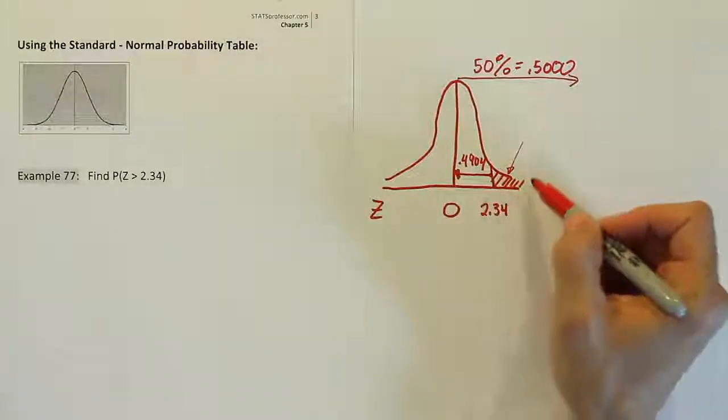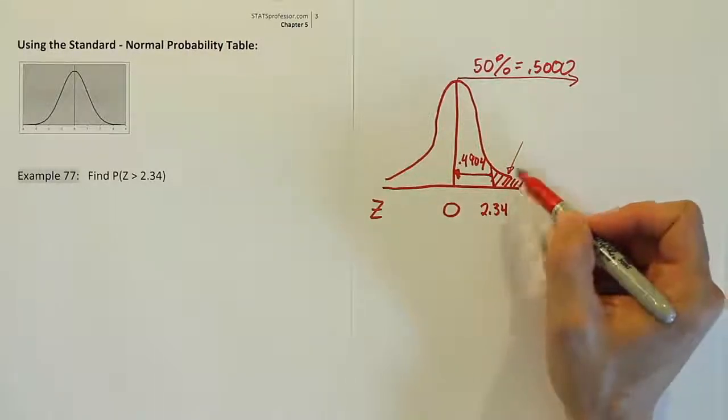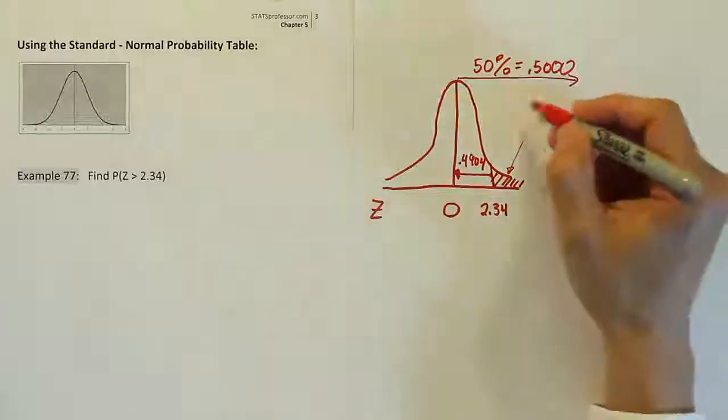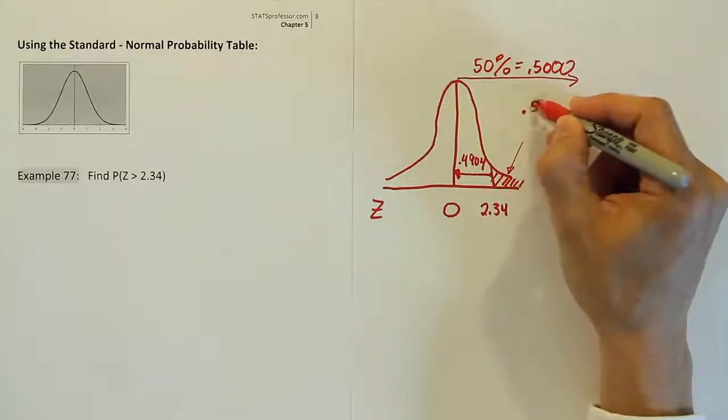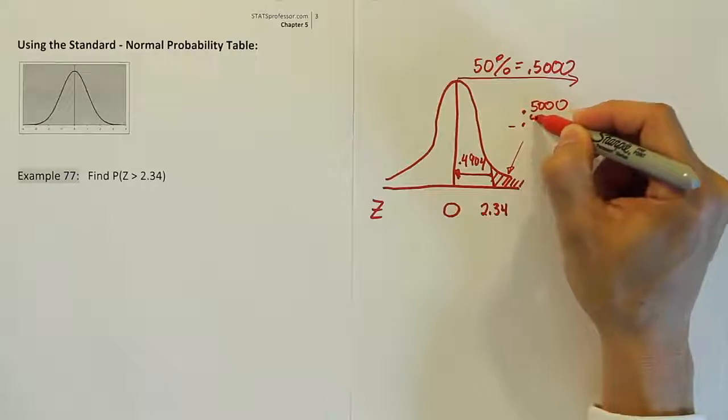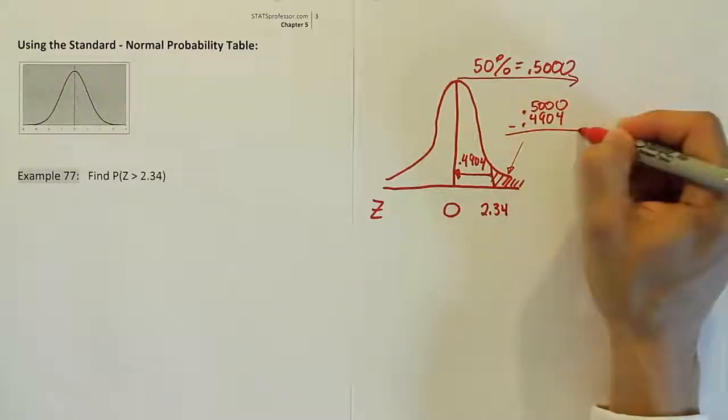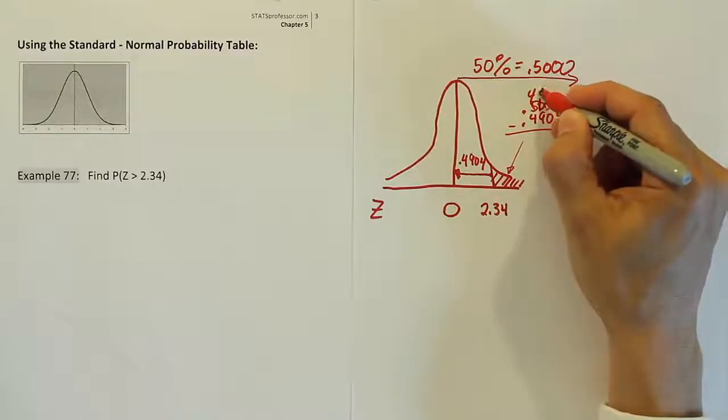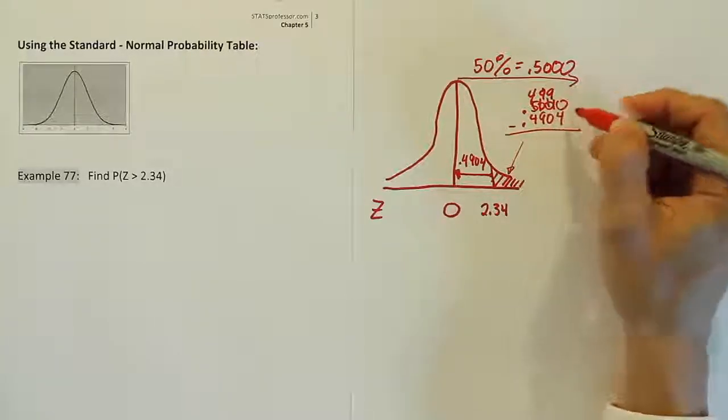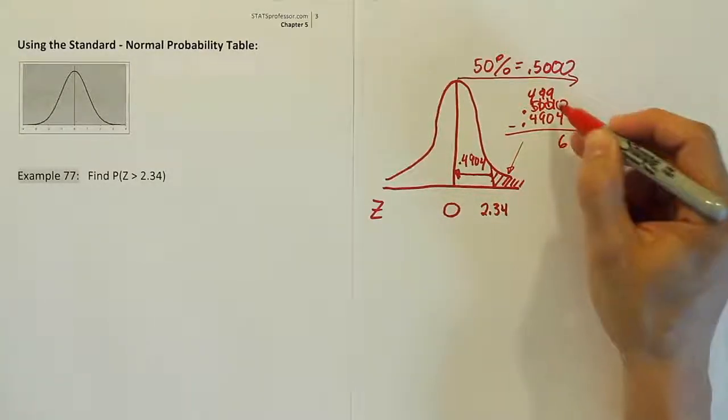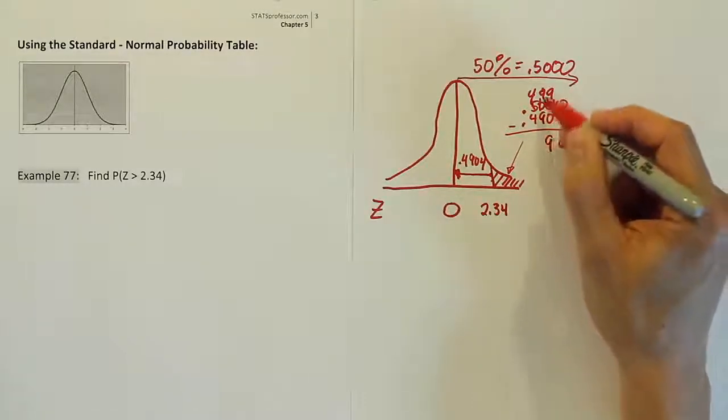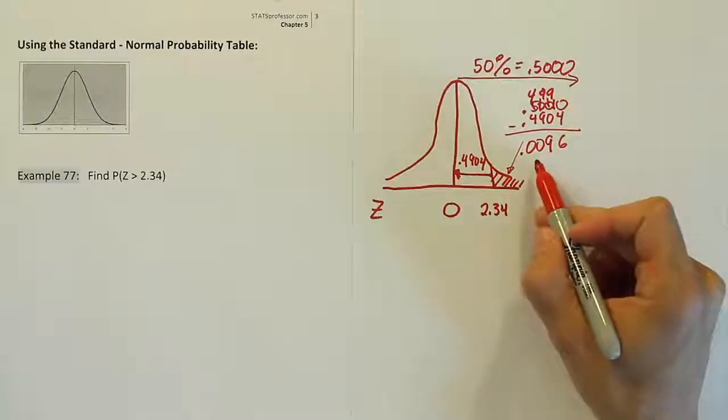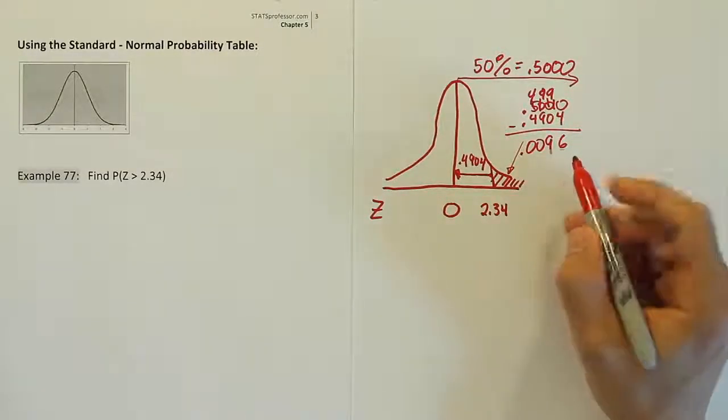That's how you do it. Whenever there's a tail area shaded, you take 0.5 and you subtract 0.4904, and it'll give you your answer. So this area is going to be 50% minus 0.4904, the area we found in the white space. And if we do a little old school borrowing, we have 10 take away 4, which gives us 6, 9 take away 0, which is 9, and then 49 minus 49 gives us 0. So you end up with the answer 0.0096.